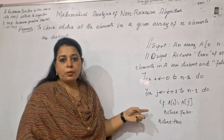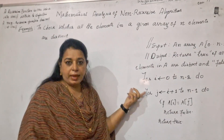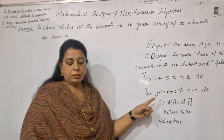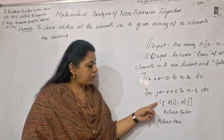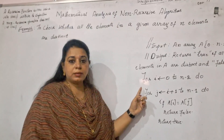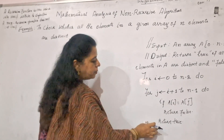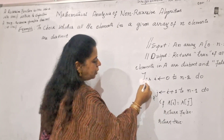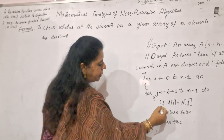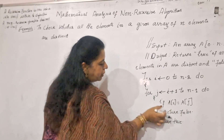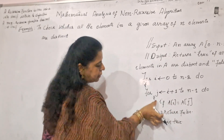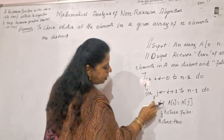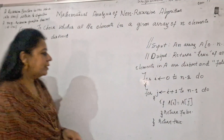The outer for loop keeps track of elements in the array. The inner for loop keeps track of comparisons for each element, checking whether each element is unique. The if statement checks: if a[i] equals a[j], return false; otherwise, after all comparisons, return true. Let us trace this pseudo code through an example.